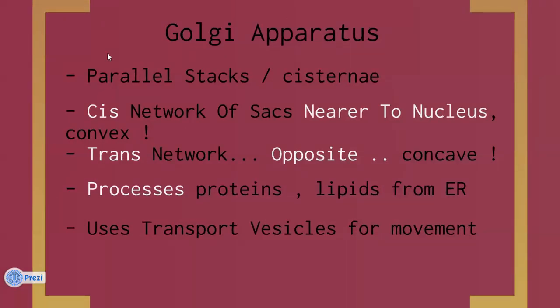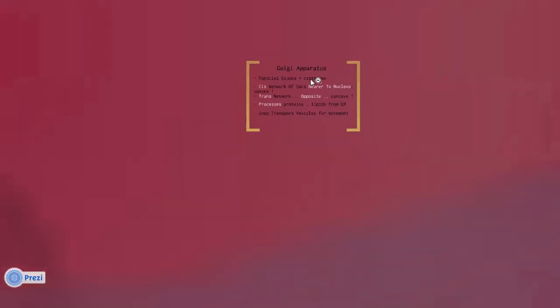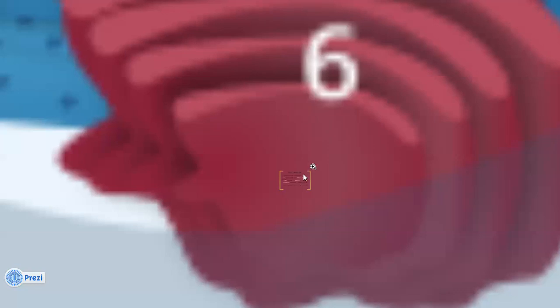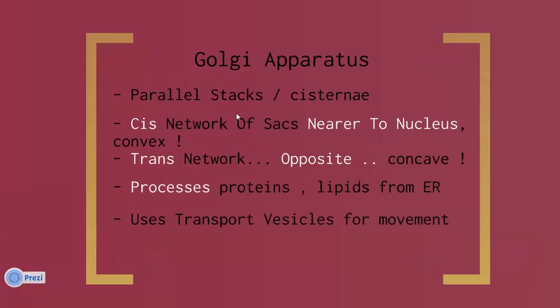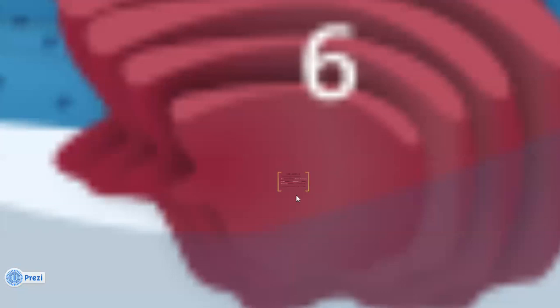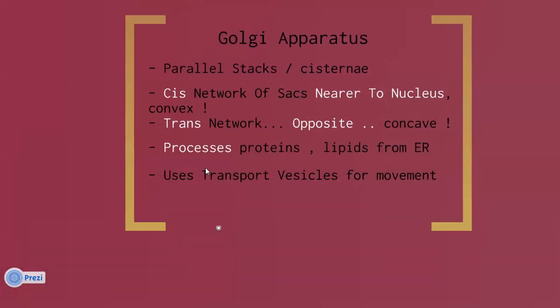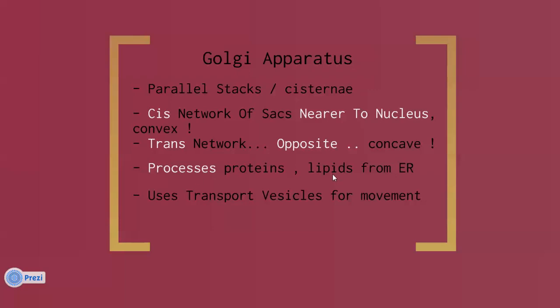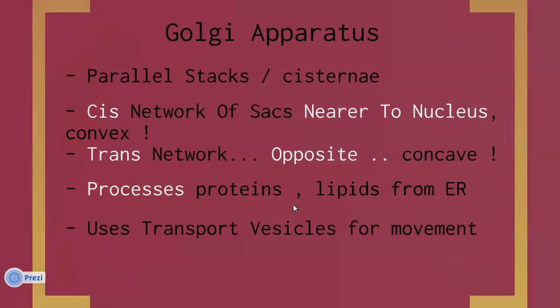The Golgi apparatus is a parallel stack; its lumen is called cisternae. The cis-network of sacs is near the nucleus and is convex. The trans-network is opposite to the nucleus and is concave. Its function is to process proteins and lipids — anything that comes from the endoplasmic reticulum — and it uses transport vesicles to move products made by the Golgi.